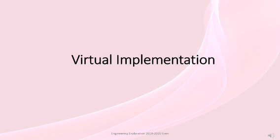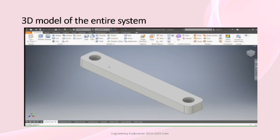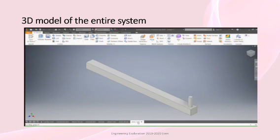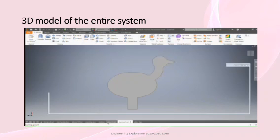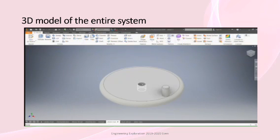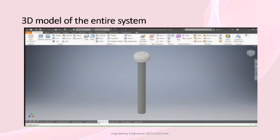In virtual implementation, 3D modeling for the selected concept helps us build the prototype. For the slider crank mechanism, the key parts include a connecting rod that connects between the slider and crank, a slider to which the duck's leg is attached, and a wheel or disk. The disk has a hole through which the DC motor shaft passes, and bolts are used for connecting the different parts.